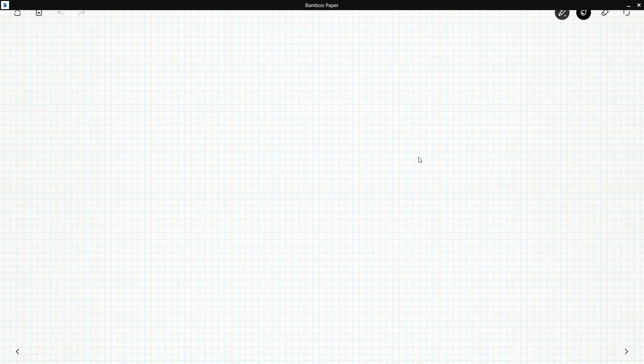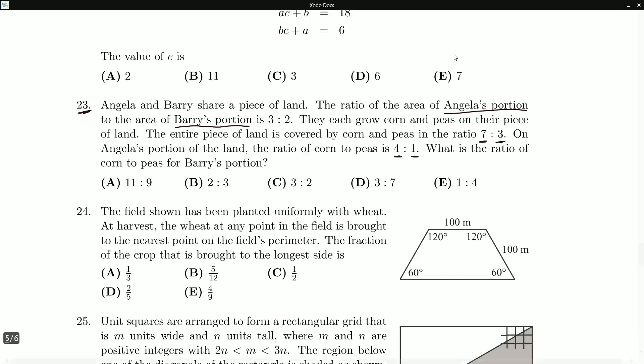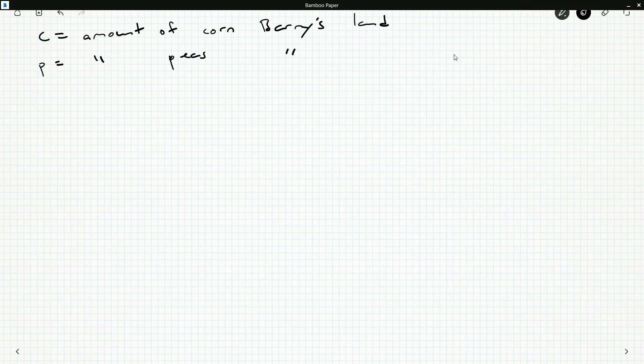So I might say, let C equal the amount of corn on Barry's land. Maybe P is the amount of peas on Barry's land. And so we just want, it's corn to peas, right? We want C to P. That's what we're looking for here.